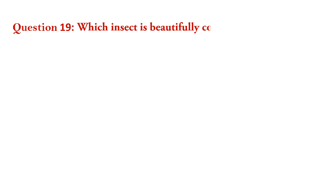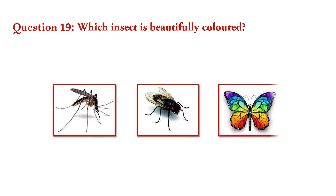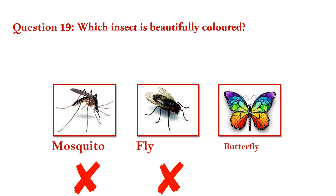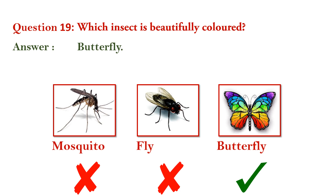Question number 19. Which insect is beautifully colored? Mosquito — wrong. Fly — wrong. Butterfly — right. Answer is butterfly.